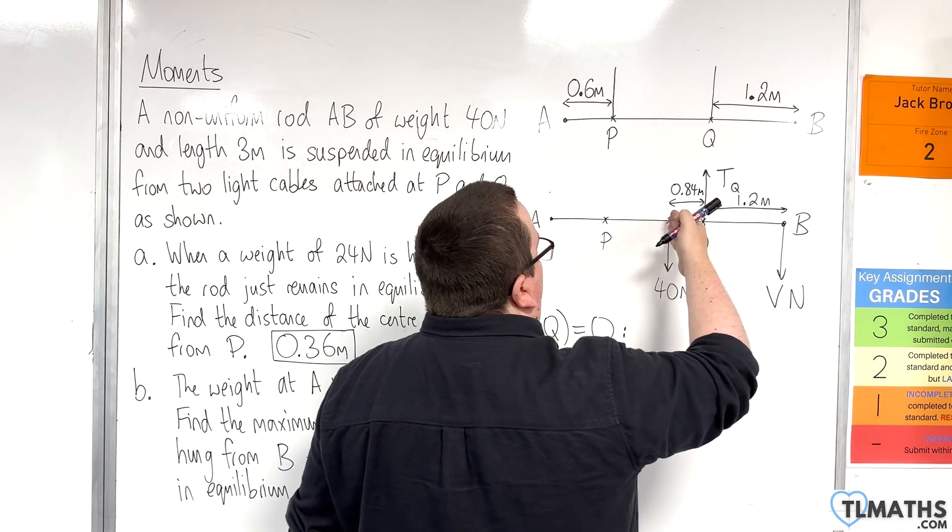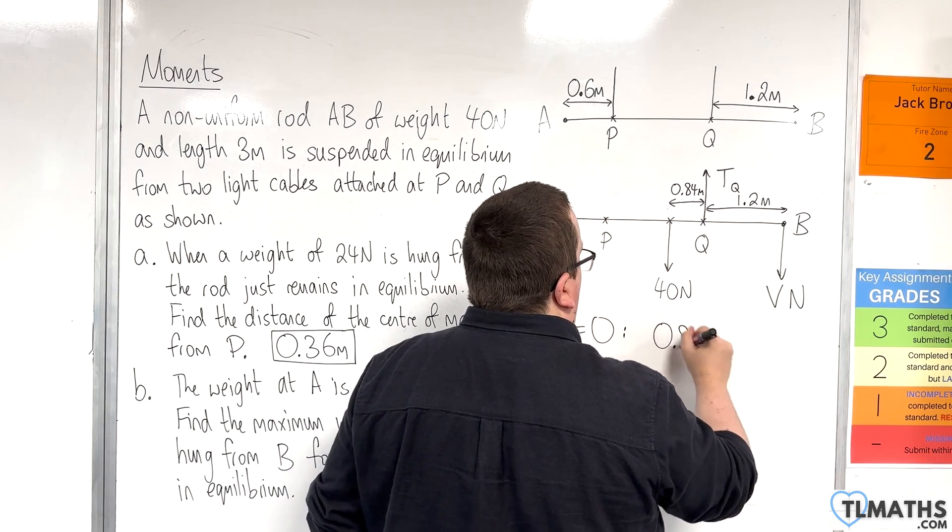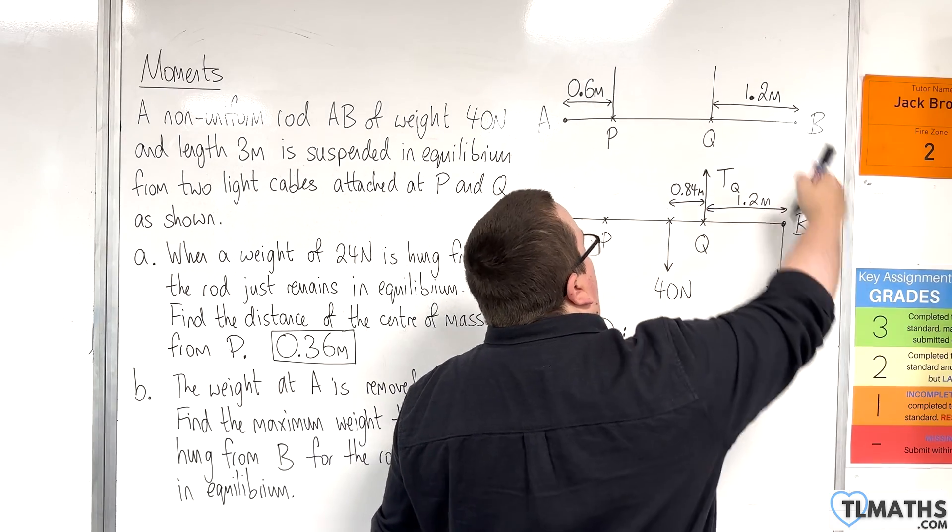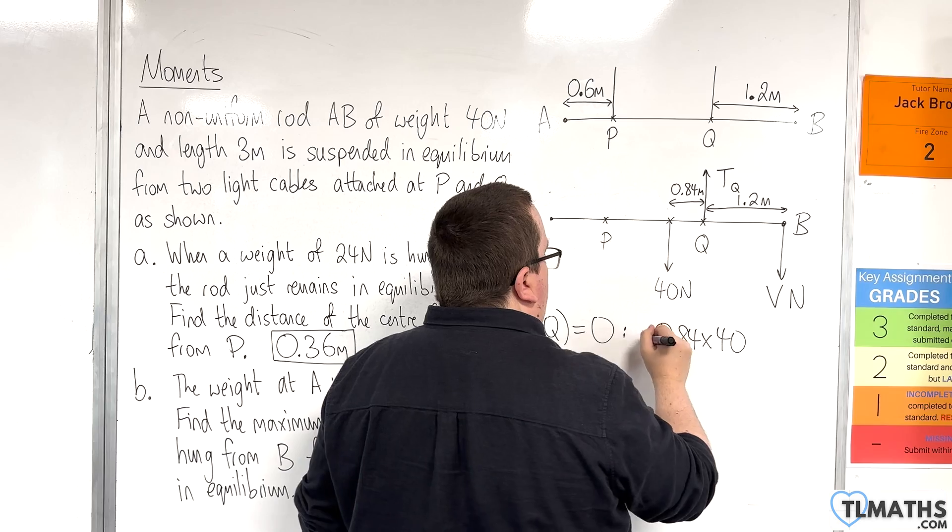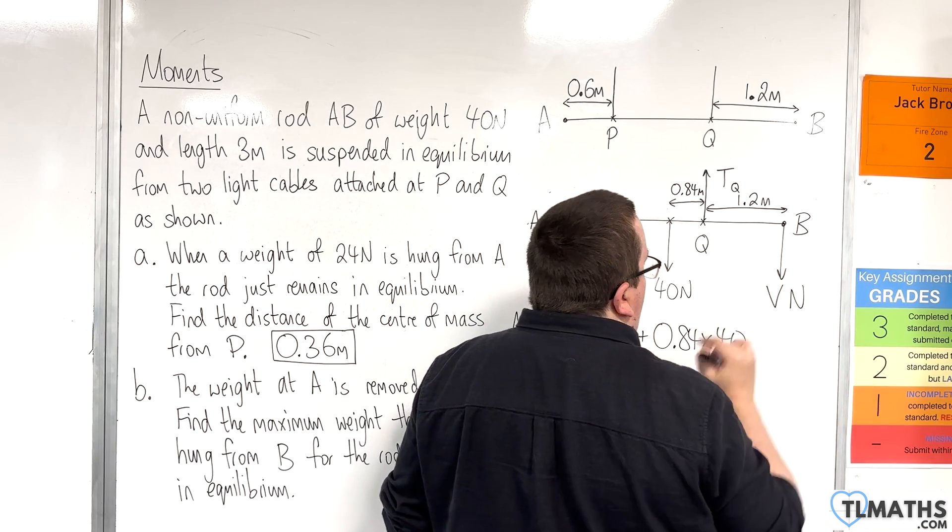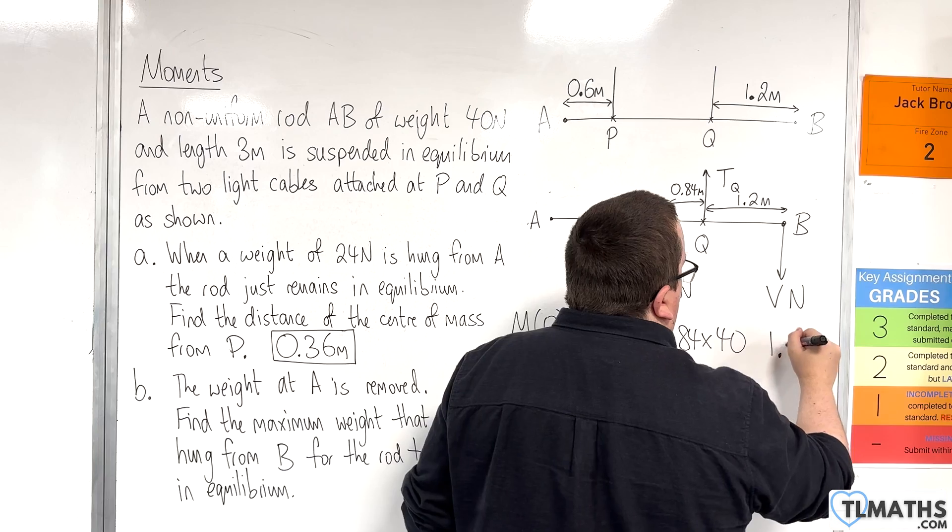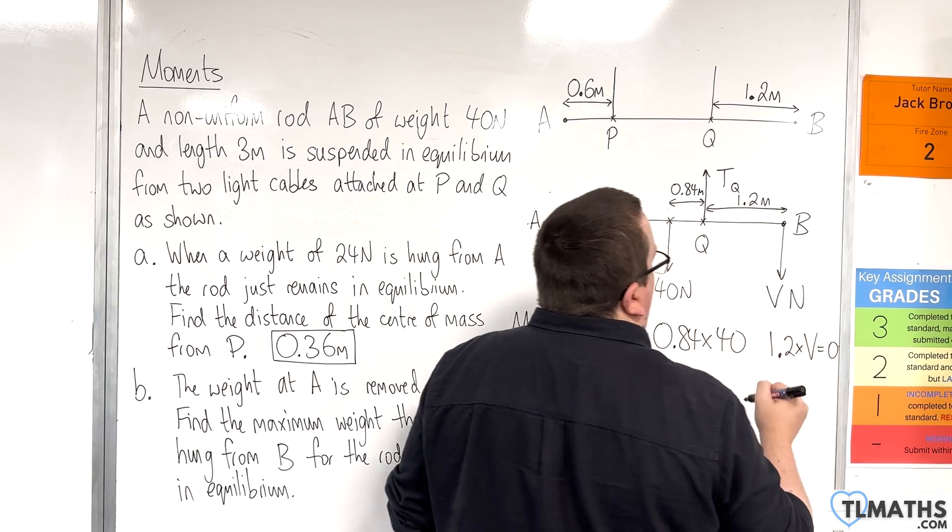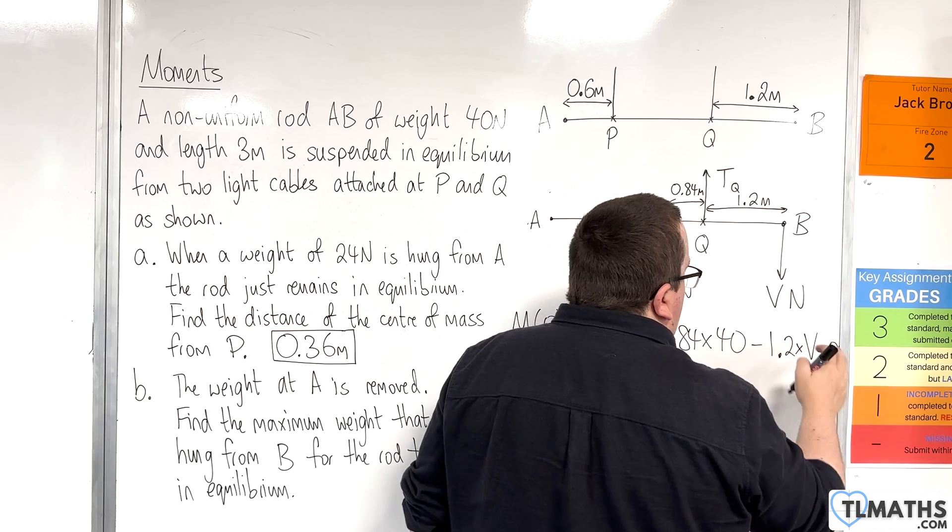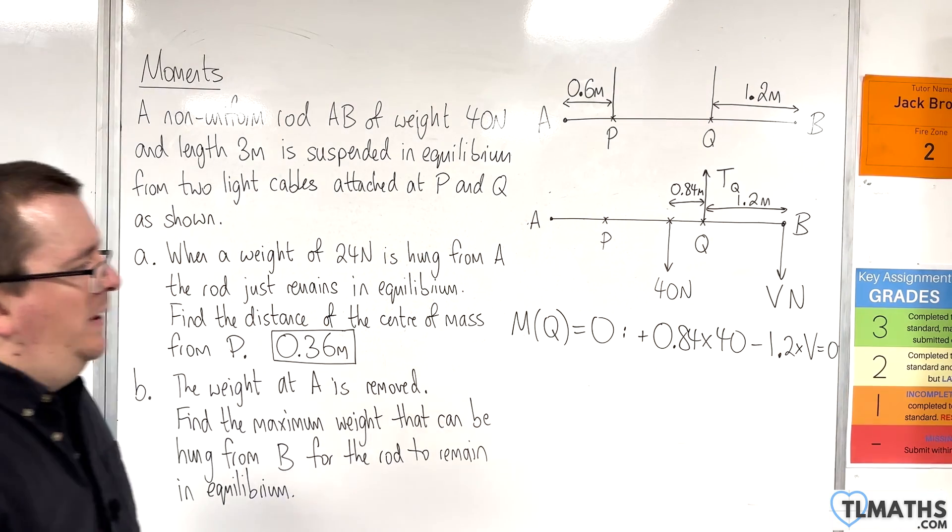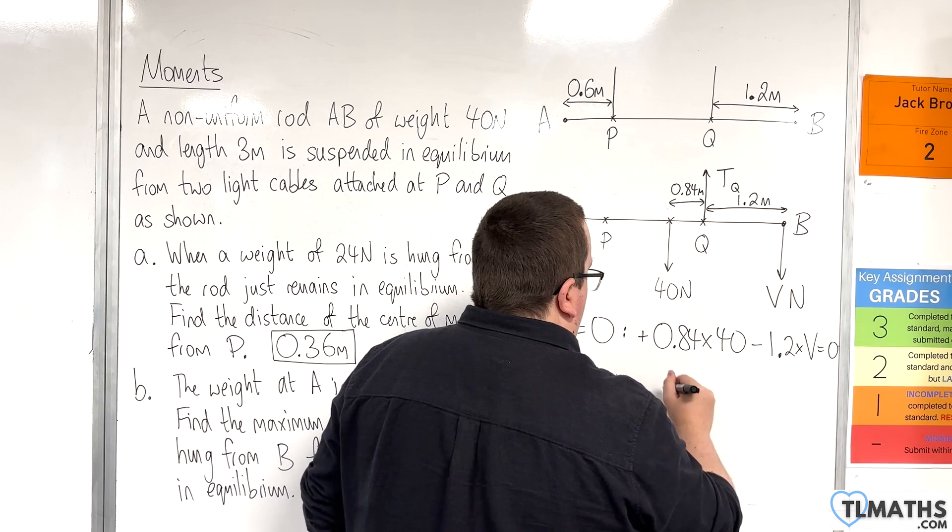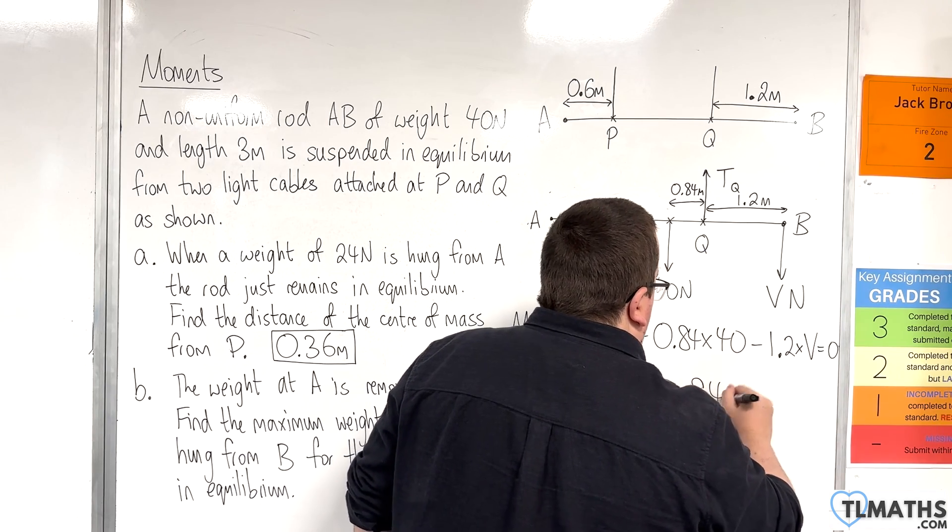So we are 0.84 metres from the 40-newton force, and that's trying to push it round this way in an anti-clockwise motion, so that's positive. And then we're 1.2 metres away from the V newtons, so 1.2 times V, and that's trying to push it round in a clockwise motion, so that's negative. And it's equal to 0 because we're going to be in equilibrium.